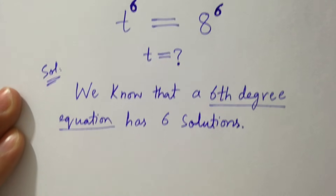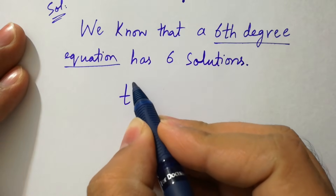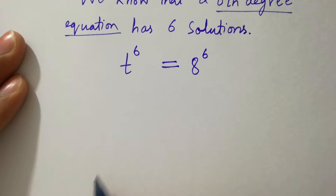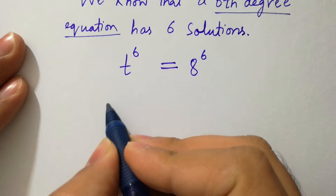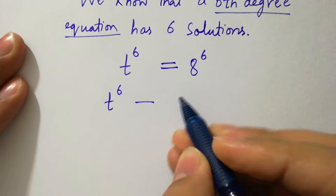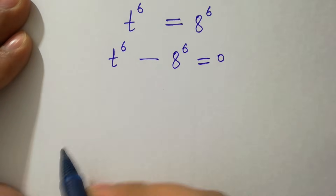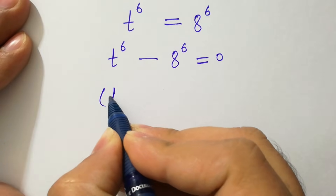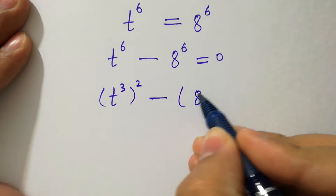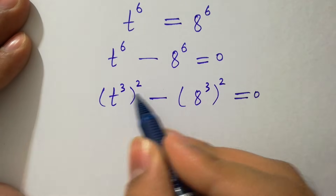So we can rewrite this problem as t to the power 6 equal to a to the power 6. It can be solved by bringing everything to one side: t to the power 6 minus a to the power 6 equals 0, which is the same as (t³)² minus (a³)² equals 0, since 3 times 2 is 6.